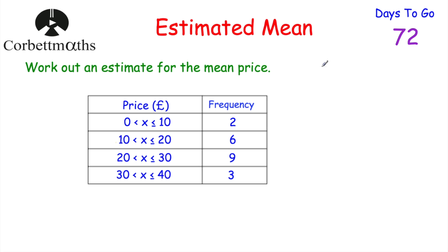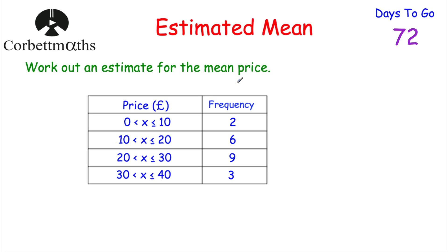Remember the mean is found by adding up all the values and dividing by the number of values. If we had a list of numbers or a simple frequency table, we can work out the mean quite easily. But if we've got a grouped frequency table like this one, we can't work out the actual mean, but we can work out an estimate for the mean.